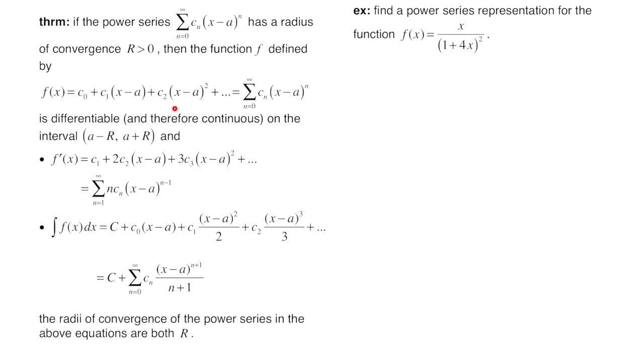We can find the derivative of this function. This represents the derivatives of each of these terms, written out in sigma notation where we take the derivative with respect to x. We bring the power n down to the front so that you have n times c sub n, you leave x minus a, and then subtract 1 from the exponent to get n minus 1. In this lesson we're going to take derivatives of functions term by term and also demonstrate taking the derivative in sigma notation.